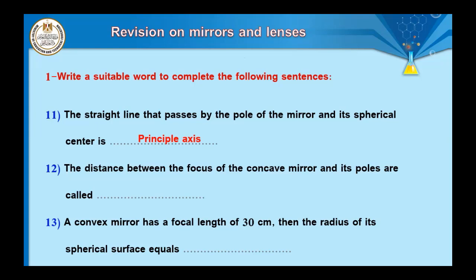Question number twelve: the distance between the focus of a concave mirror and its pole is called ___. That is called the focal length. Question number thirteen: a convex mirror has a focal length of 30 cm. Its radius of spherical surface equals: since radius equals double the focal length, the radius equals 60 cm.